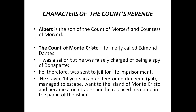The fourth character is the Count of Monte Cristo, formerly called Edmond Dantès. He was a sailor but was falsely charged with being a spy of Bonaparte, and therefore was sent to jail for life imprisonment. He stayed 14 years in an underground dungeon, managed to escape, and went to the island of Monte Cristo. There he became a rich trader and changed his name to Monte Cristo, taking the name of the island.